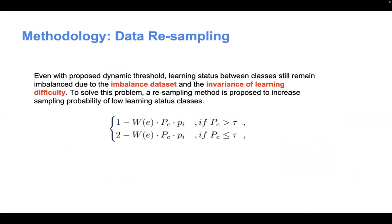The second part is data resampling. Even with the proposed dynamic threshold, learning status between classes still remains imbalanced due to the imbalanced dataset and the invariance of learning difficulty. To solve this problem, a resampling method is proposed to increase sampling probability of low learning status classes.